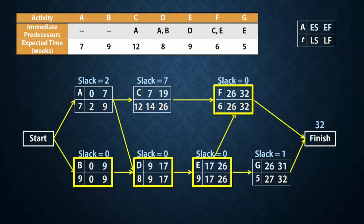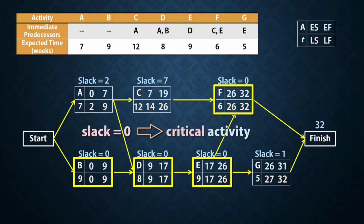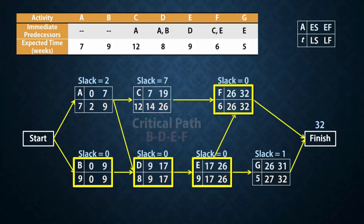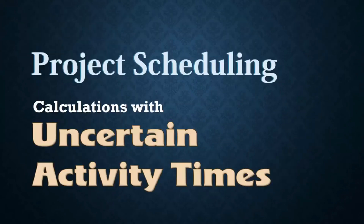The activities with zero slack are called critical activities. And they form the critical path, which is the longest path in the network. So the critical path here is B, D, E, F.